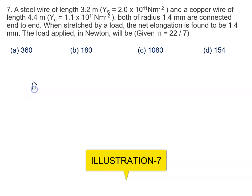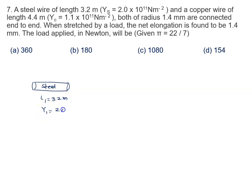Let's say this is the steel wire. This is wire of steel. So length of this steel wire is given to us, L1 is 3.2 meter. Young's modulus Y1 is given to us 2 into 10 raised to power 11 Newton per meter square.